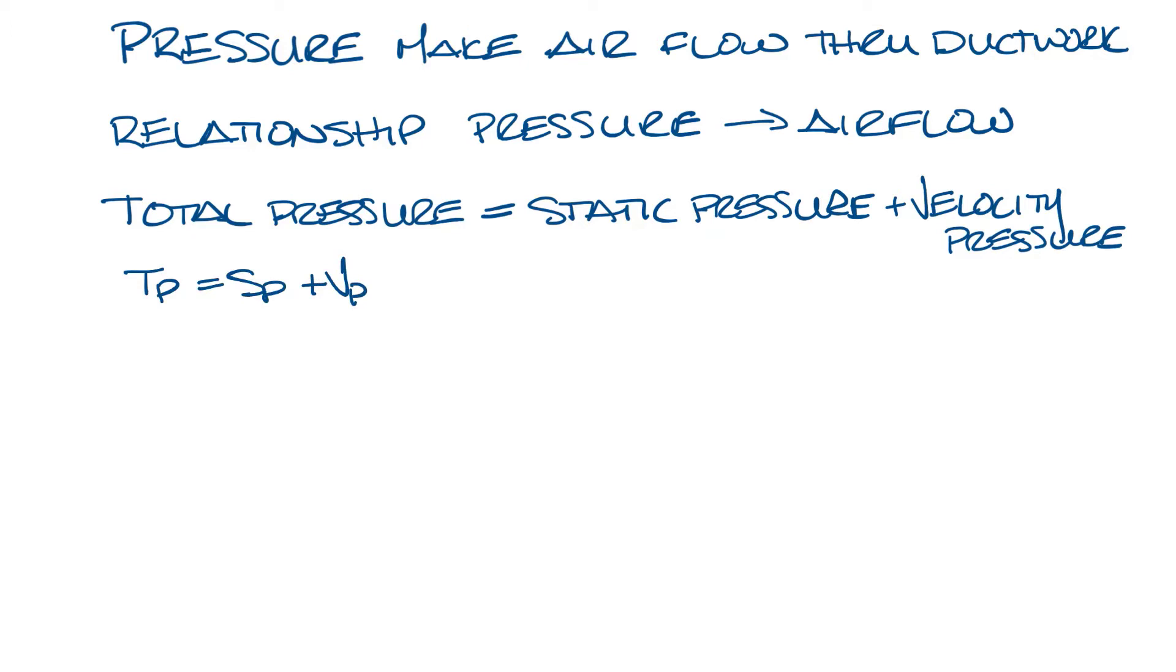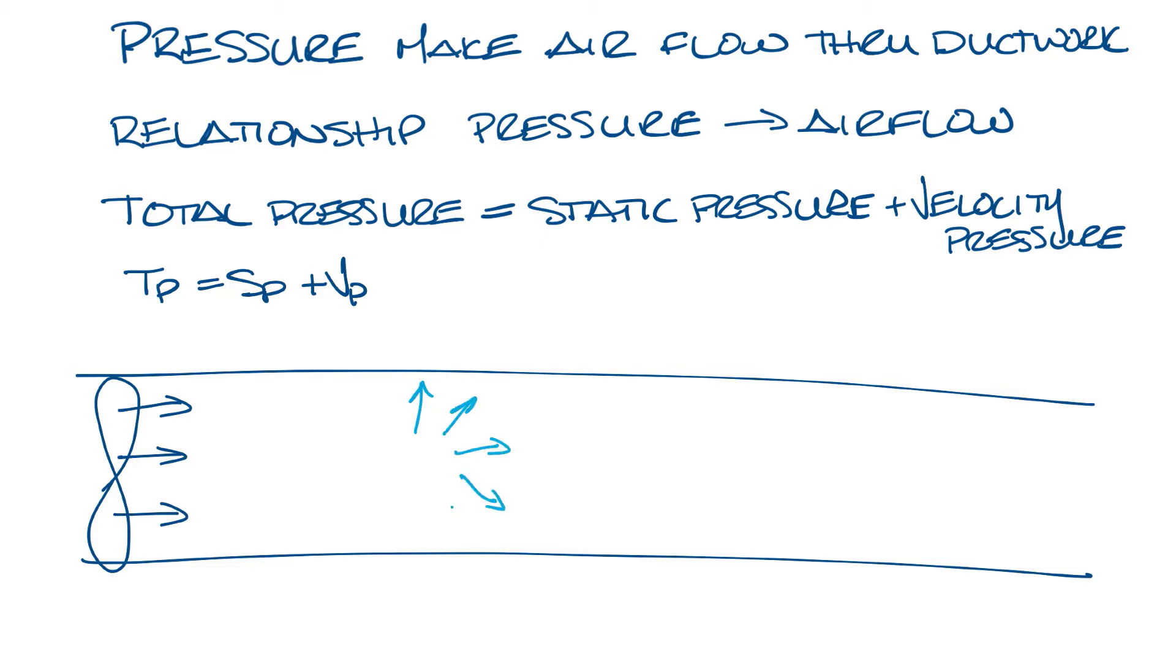So let's draw some ductwork and put a fan here blowing air down our ductwork. When air moves down the ductwork, there are two types of pressures going on. Static pressure, which is exerted in every direction, and velocity pressure, which is only exerted in the direction of air flow. The sum of these two pressures is total pressure.